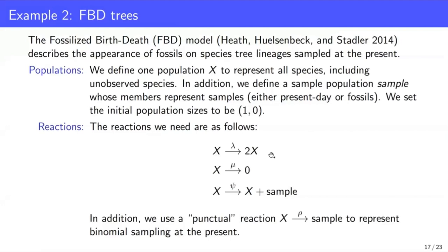The reactions here, we're going to need a speciation reaction, an extinction reaction, and this sampling reaction. And you can see this sampling reaction doesn't actually remove individuals from the pool, but rather just adds a new sample at a particular time. And in addition to these, we use a punctual reaction. This is Remaster's notation or nomenclature for a reaction that occurs at a particular time. So this occurs only at the present and produces the present-day samples.